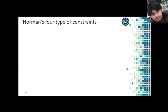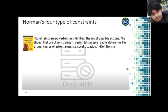There are four types of constraints written by David Norman. Constraints are powerful clues limiting the set of possible actions. Thoughtful use of constraints in design lets people readily determine the proper course of action even in a novel situation. Norman breaks down the constraints into four subcategories.